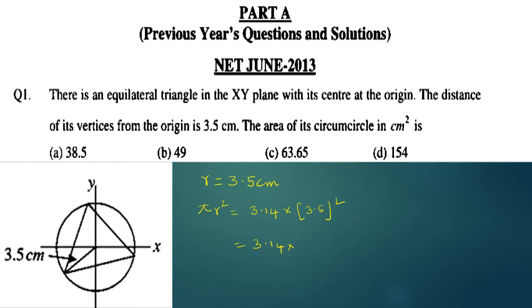Using π = 3.14 and r = 3.5, we calculate r² = 12.25. Then 3.14 × 12.25 gives us 38.465 cm².